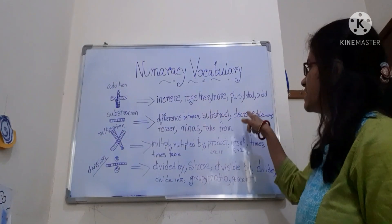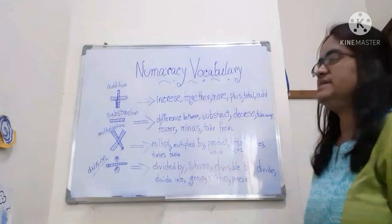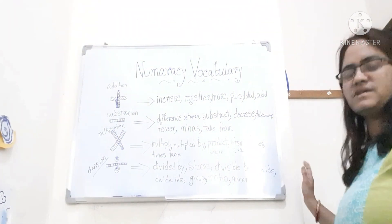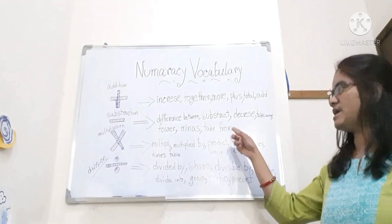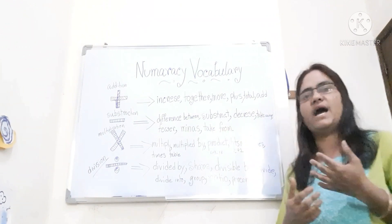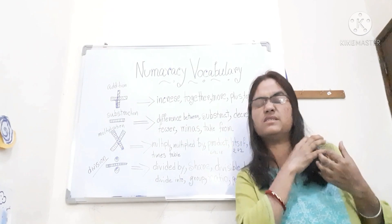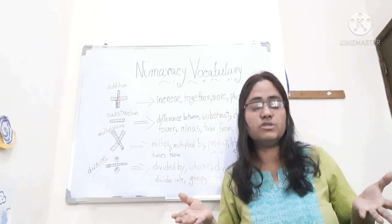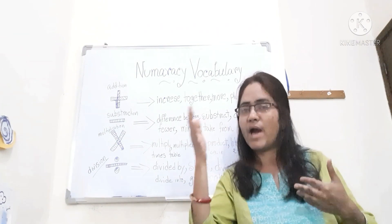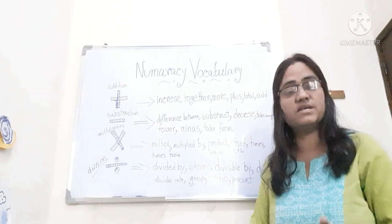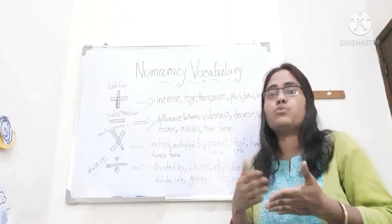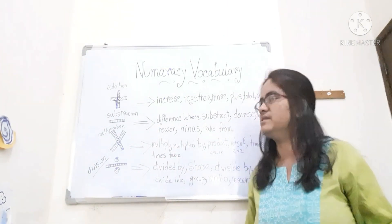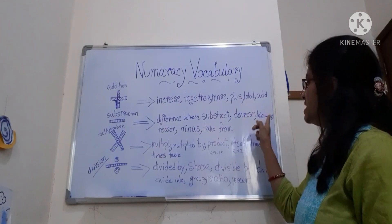Now number two — I am talking about subtraction. In the case of subtraction, the vocabulary is: difference between, subtract, decrease, take away, fewer, minus, take from. Suppose I had ten chocolates with me and somebody came and took away all the chocolates from me — he snatched all the chocolates and didn't give them back. The quantity of chocolates with me decreased because he took away all the chocolates. What is the difference between what I had before and what I have now? Ten minus ten. So I am using: minus, difference between, decrease, take away, take from.